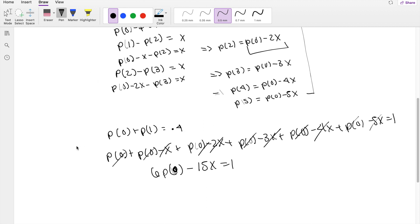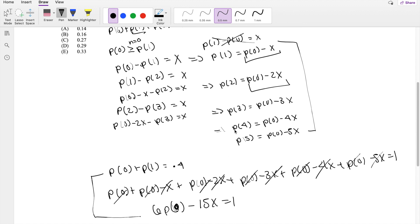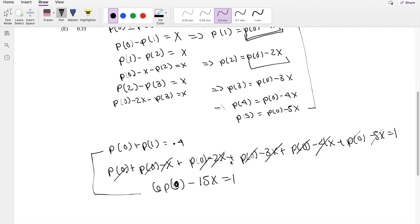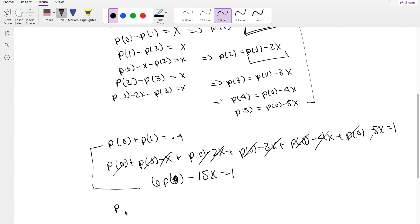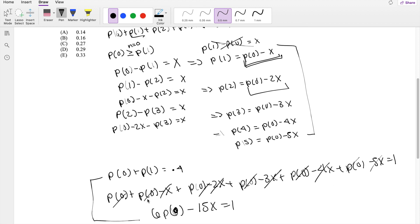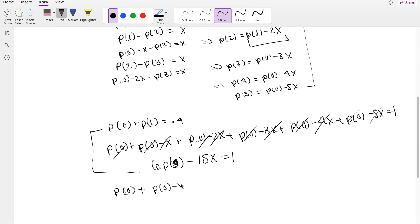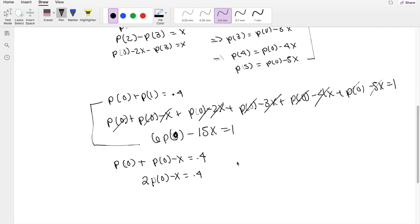Okay, so we almost have two equations. Because as you may know from linear equations, in order for us to solve for two variables, you need two equations. But right here we have three. But the good thing is we do know the probability of 1 is equal to probability of 0 minus x, so we can put that in there. Probability of 0 plus probability of 0 minus x is equal to 0.4. So then this is equal to 2 times probability of 0 minus x is equal to 0.4. Alright, plugging that in, you get these two statements here.